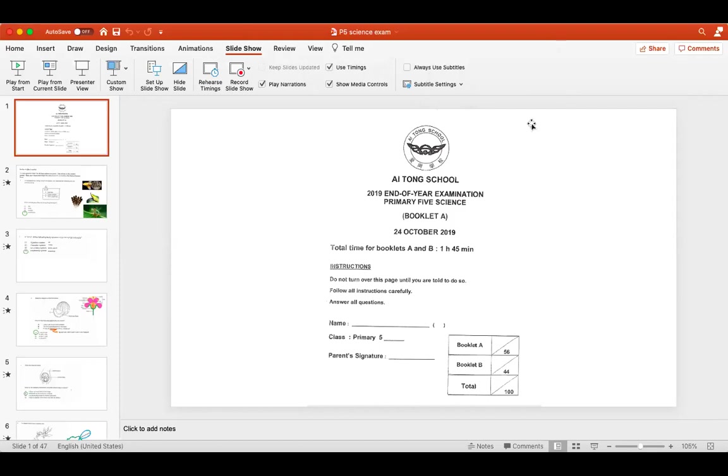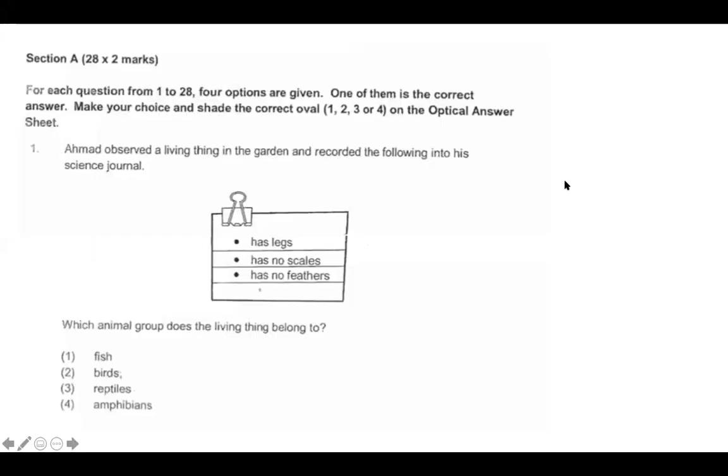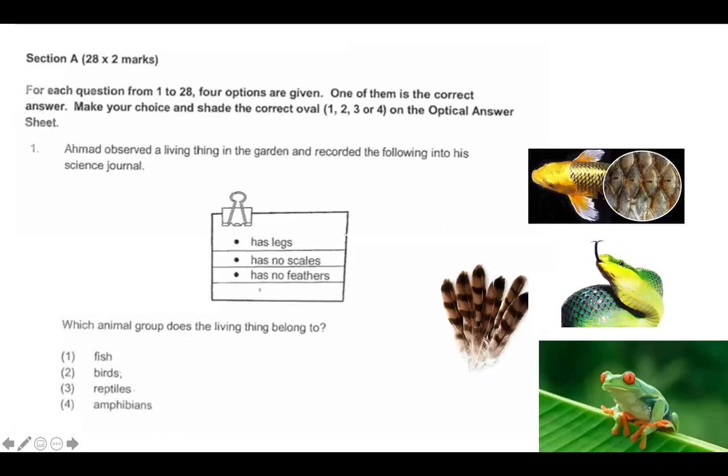Okay, so today we'll be going over the P5 science exam booklet, booklet A and B. Starting with section A, Ahmed observed a living thing in the garden and recorded the following: it has legs, it has no scales, and it has no feathers. We're going to think what animal group does the living thing belong to? So these are the groups, and I'd just like you to imagine them. For now, I put images on the screen. A fish has scales, whereas this has no scales, so it can't be a fish. Birds have feathers, and this has no feathers, so it can't be a bird. If you think about reptiles, for example snake, they have scales, whereas this has no scales, so it can't be a reptile either. And lastly, amphibians, for example frog, has legs, it has no scales, and it has no feathers. This would be number four.